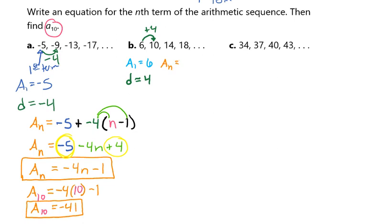So we have 6 plus d times n minus 1. Then we distribute our 4, and that gives us a sub n equals 6 plus 4n minus 4. We can combine our like terms, and that gives us a sub n equals 4n plus 2. So that's the first answer, that's our equation.